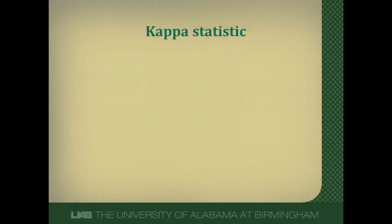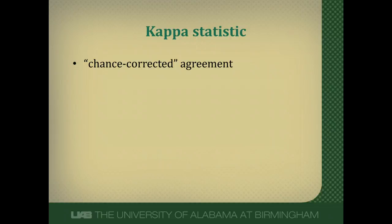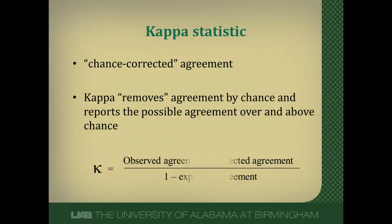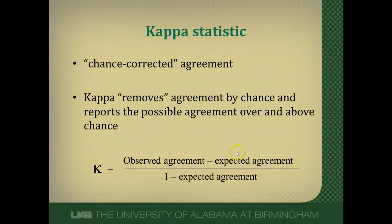One way we can get around the issue of dumb luck guessing is through something called the kappa statistic. You can think of the kappa statistic as chance-corrected agreement. What it tries to do is remove agreement that would have occurred by chance and give you a sense of the agreement that is above and beyond chance. The formula for kappa is: observed agreement minus expected agreement, divided by 1 minus expected agreement. It removes out this expected agreement because there is some level of agreement that's just due to chance alone.